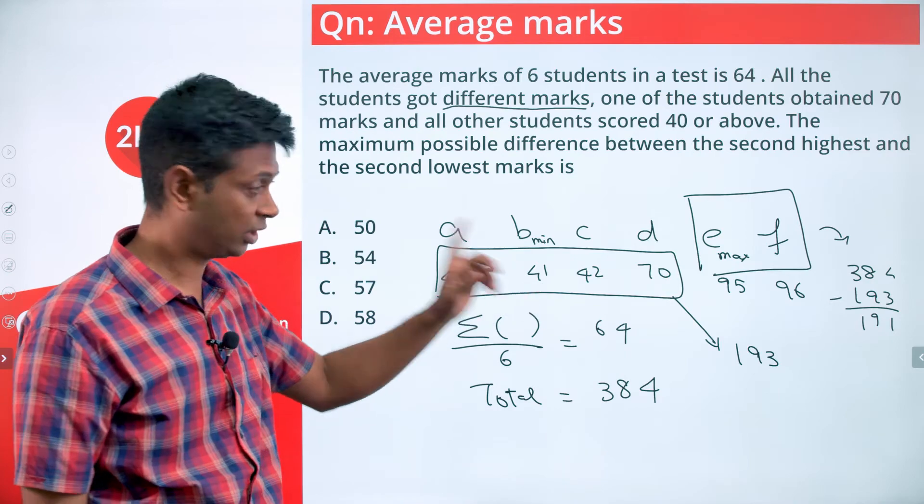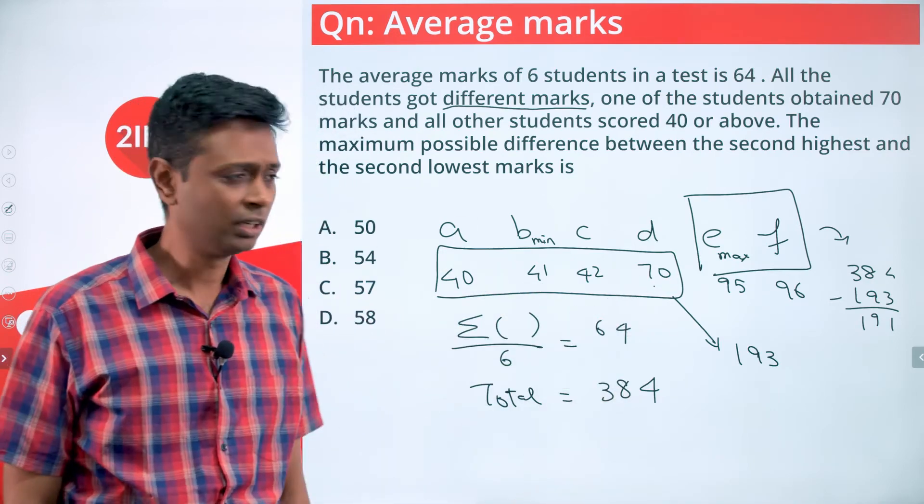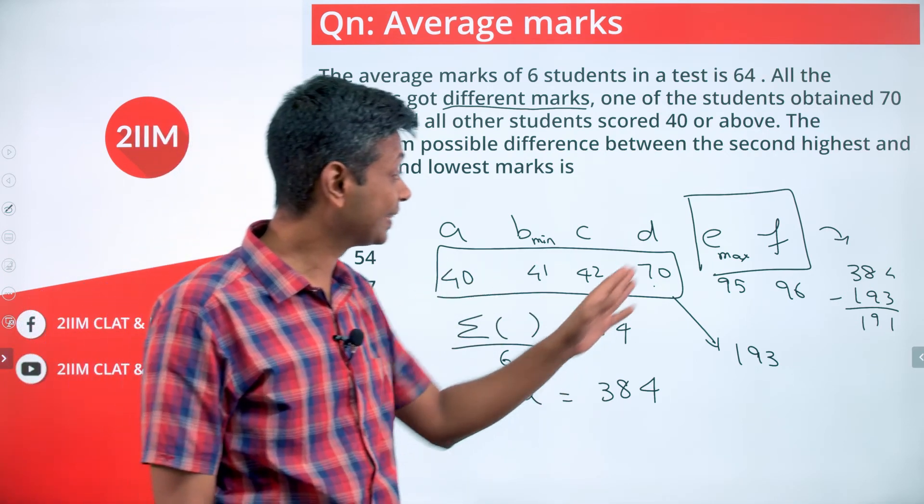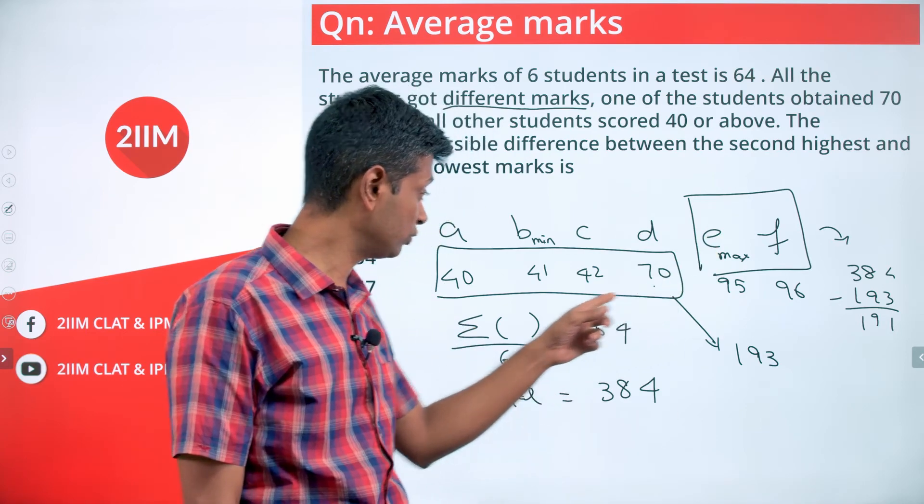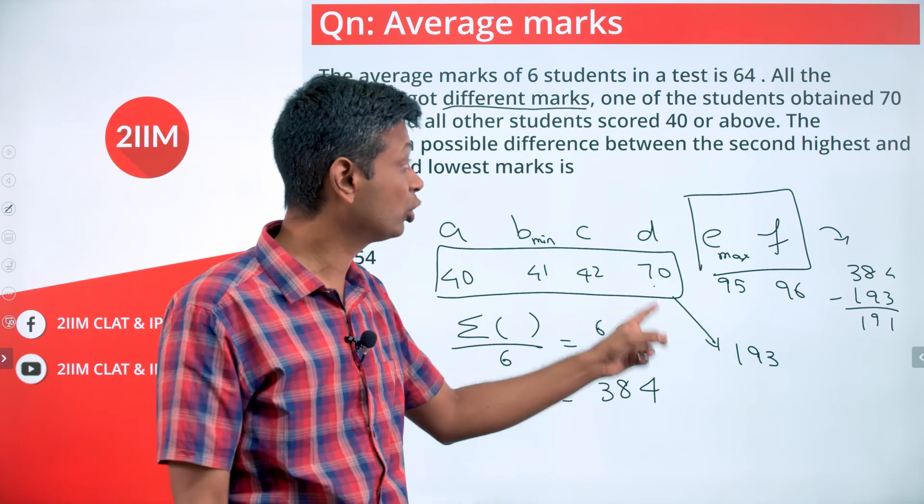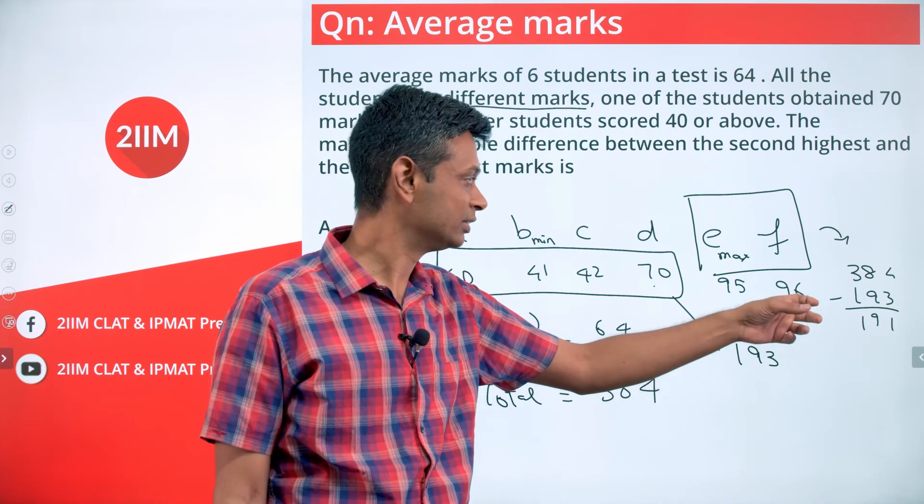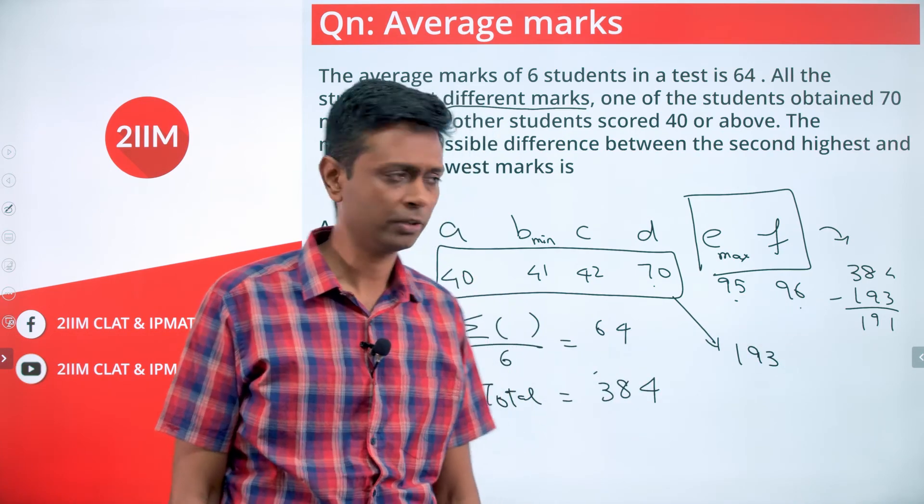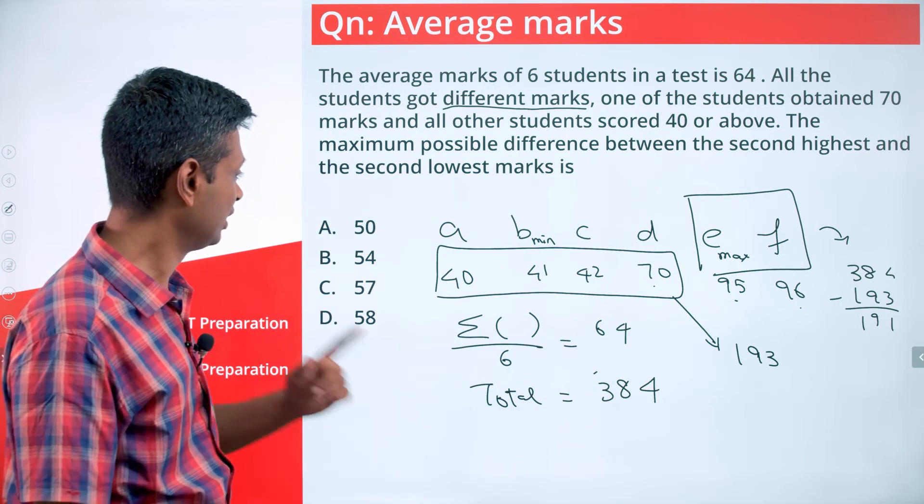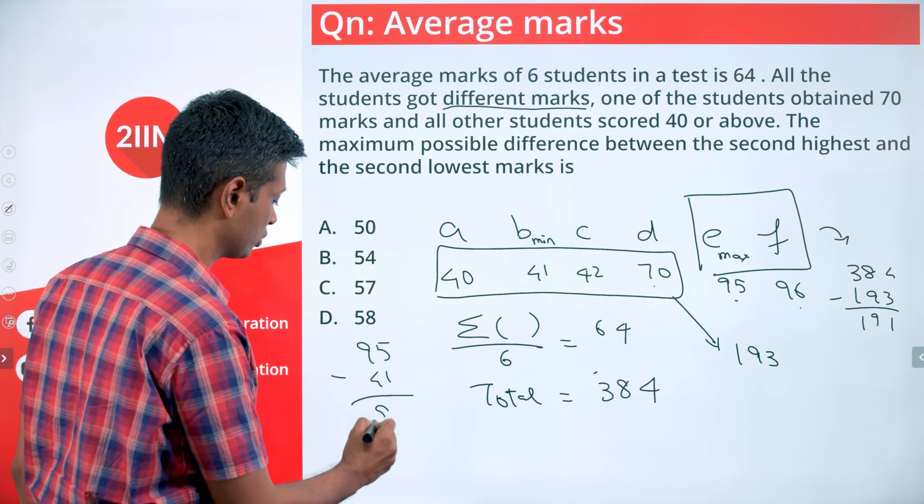Everybody has got 40 or more—done. Average is 64—done. This 70 sitting here—done. We've tried to keep this as low as possible. We want to take that as high as possible. That means all of these should be as low as possible: 40, 41, 42 get baked in straight away, 70 because we've been given a 70. These two should be the remaining adding up to 191. This is as low as possible, this is as high as possible: 95, 96. Now we want to find the maximum difference. The best case scenario for having maximum difference: that difference will be 95 minus 41, which is 54.